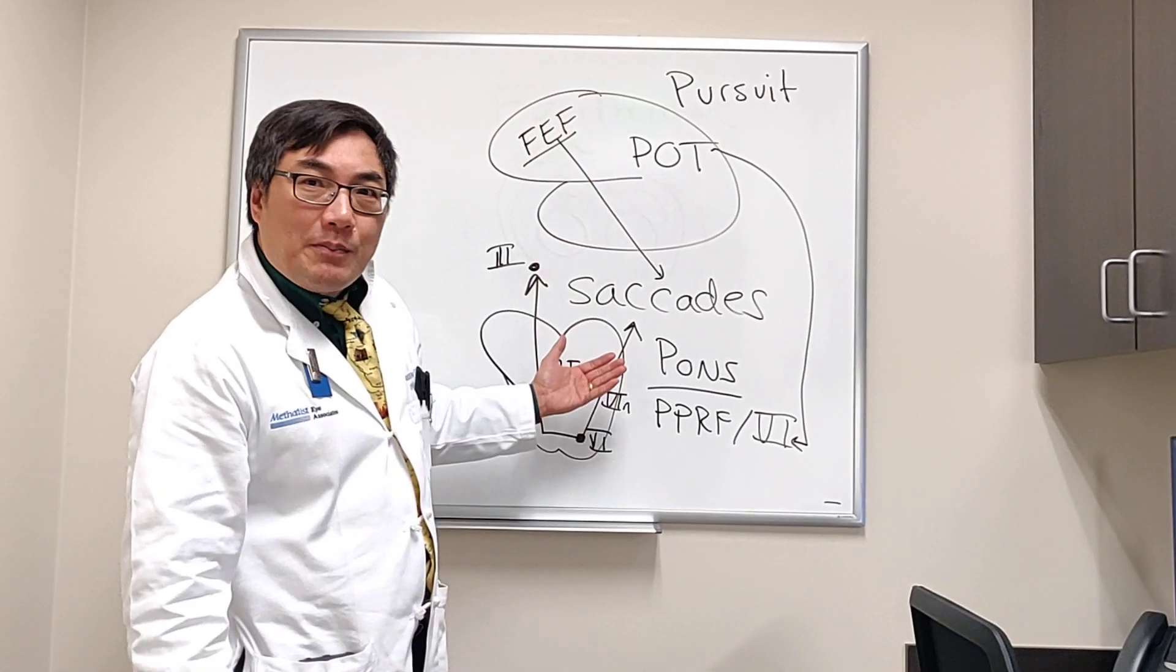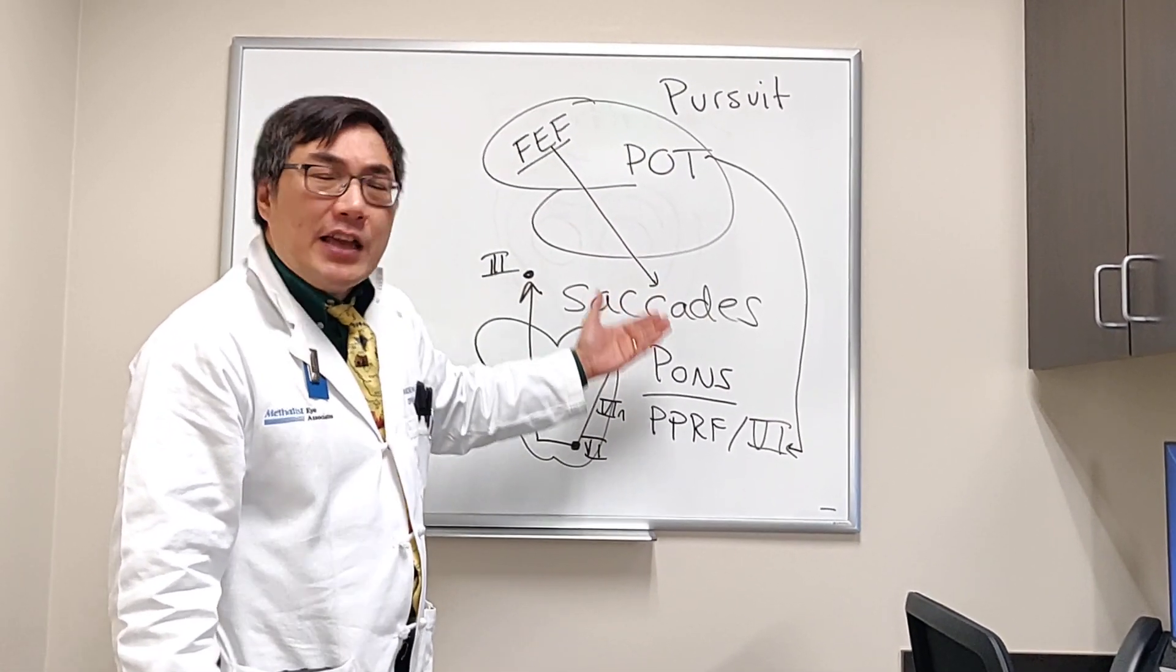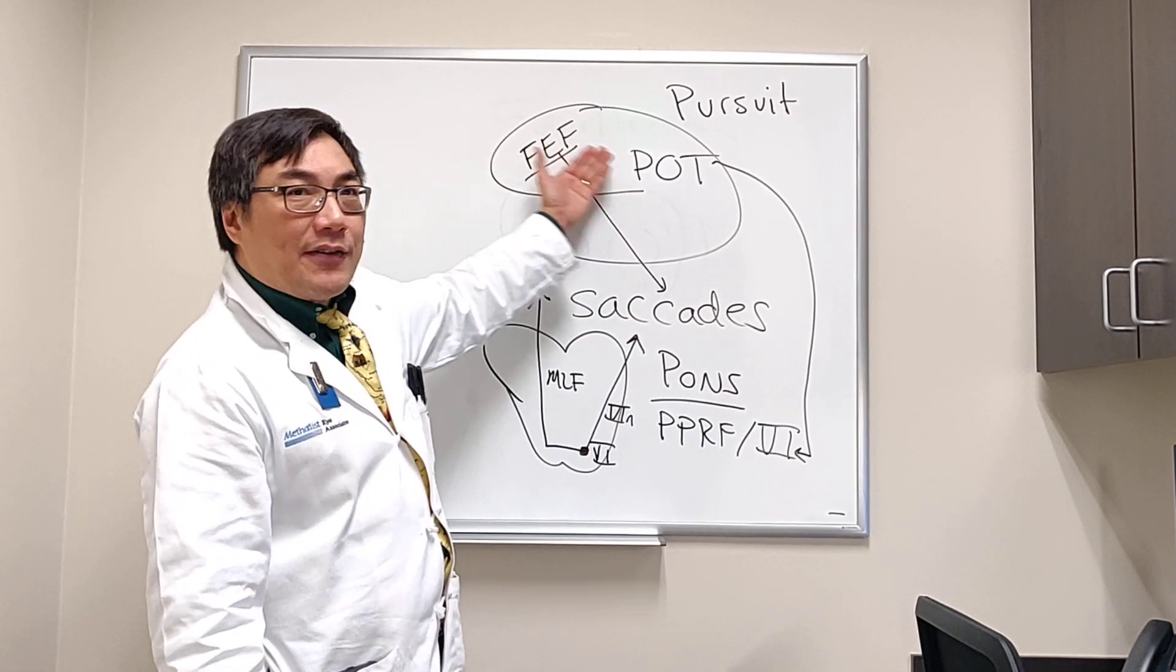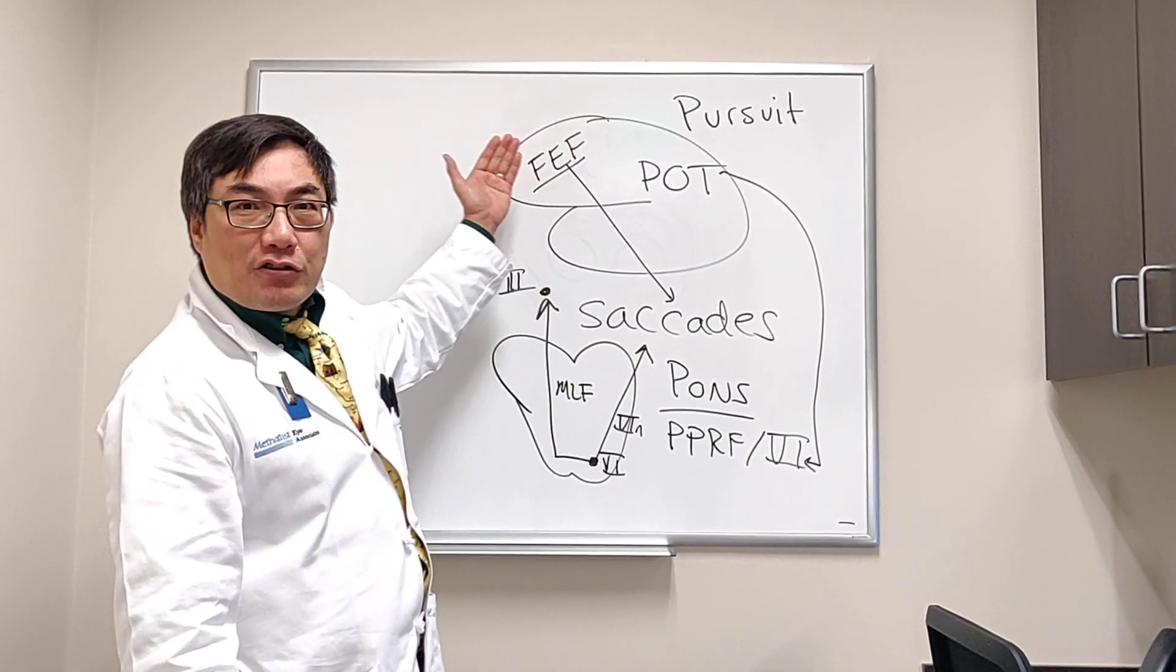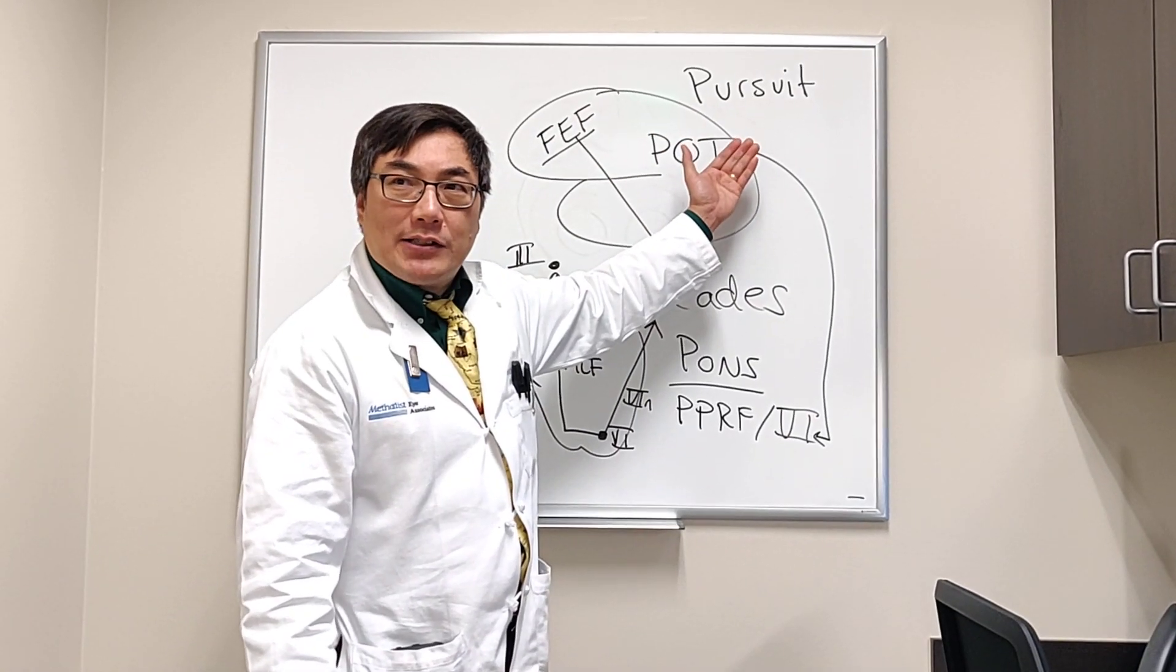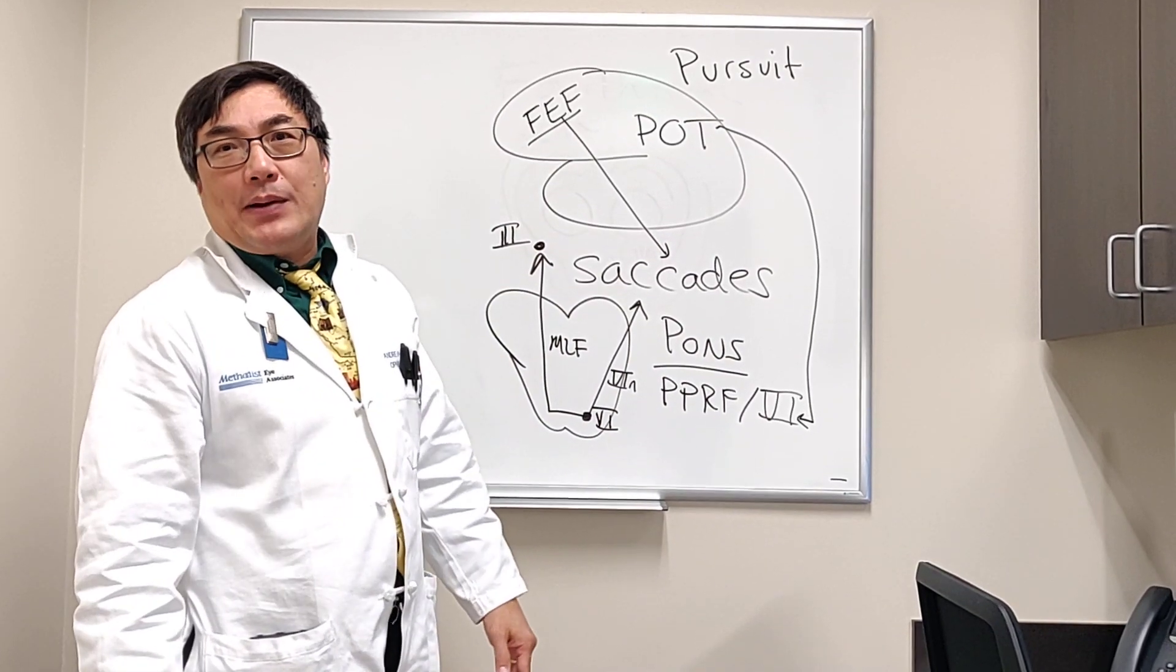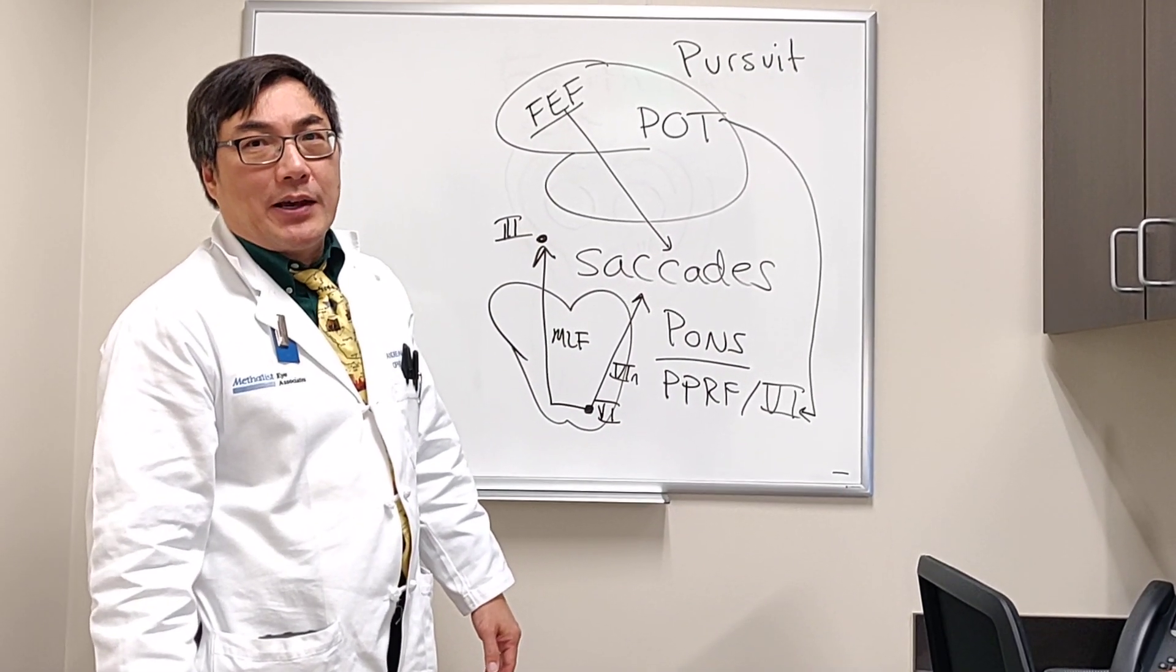So the supranuclear pathway is similar between the pursuit and the saccade pathways. The only difference is the site of origin in the cortex is contralateral frontal eye fields for saccades and ipsilateral parietal-occipital temporal cortex for the pursuit. Everything else runs the same pathway, the same final common pathway.